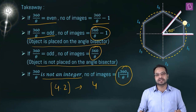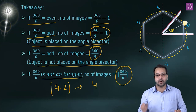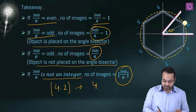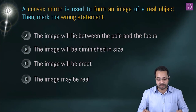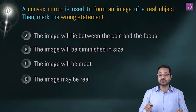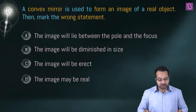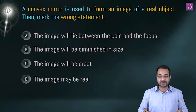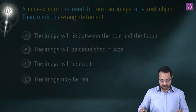The visualization technique is also worth remembering. Moving to the next question: a convex mirror is used to form an image of a real object — mark the wrong statement. The options are: (A) image lies between pole and focus, (B) image is diminished, (C) image is erect, (D) image may be real.